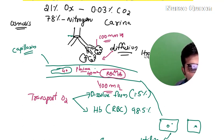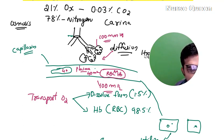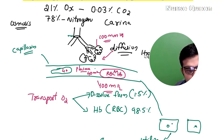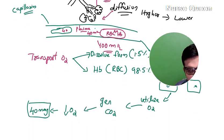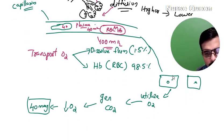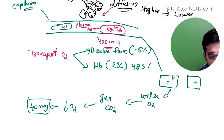This is the alveoli. The oxygen pressure is 100 mmHg — diffusion occurs here. There are thin blood vessels and capillaries. Plasma is 40 mmHg; the RBC and hemoglobin are also at 40 mmHg. Oxygen moves from 100 mmHg into the plasma. Carbon dioxide is also exchanged in this process.